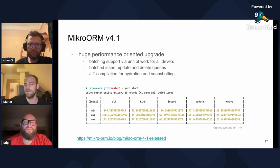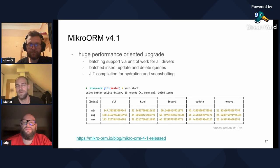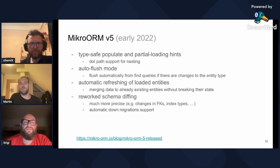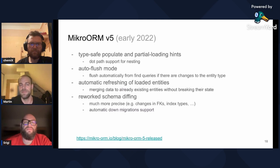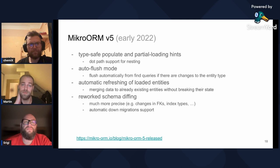Here in the screenshot you can see a simple benchmark that runs basic create, read, update, and delete operations on 10,000 entities. And that brings us to the current stable release, version 5. It doubled down on type safety, bringing it to more options including populate and partial loading and ORDER BY. It also introduced autoflush, a feature that protects you from querying the database when there are in-memory changes that could affect the query.